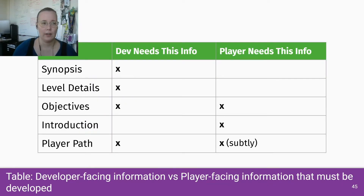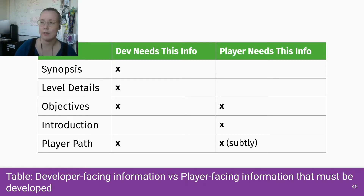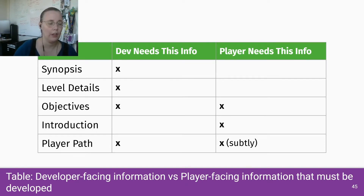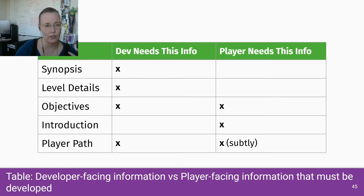What you're including in your GDD is meant for communication. Some sections are meant as notes for yourself and your team — that's what 'dev needs this info' means. And some sections are specifically meant for your player to understand what is coming up for them. The synopsis and level details are both for dev use only; you're not generally going to be saying those things to the player.